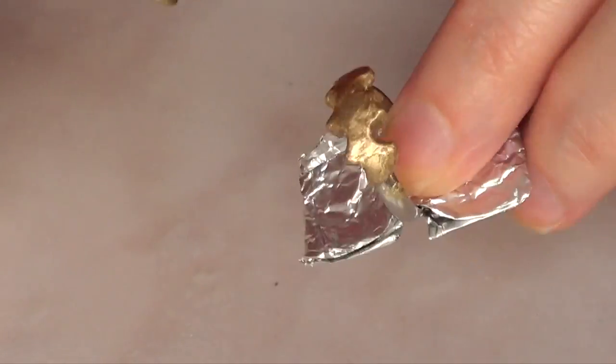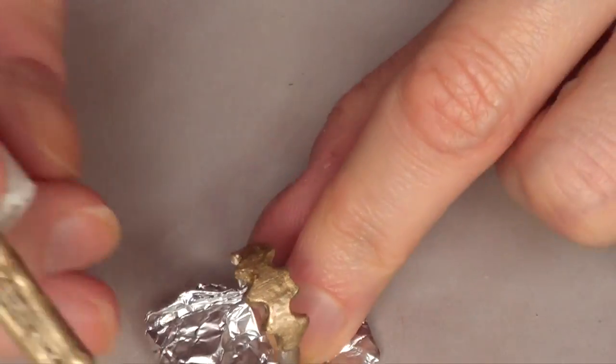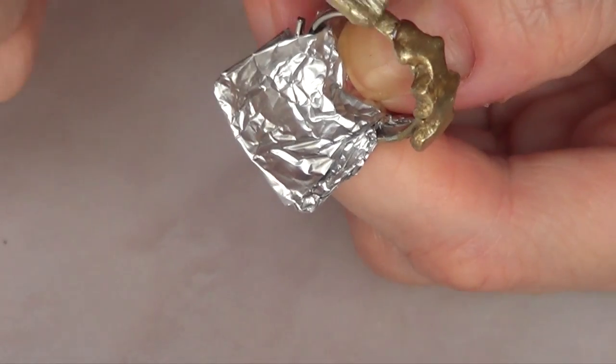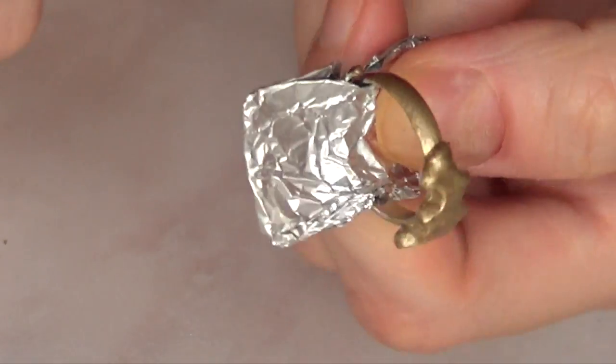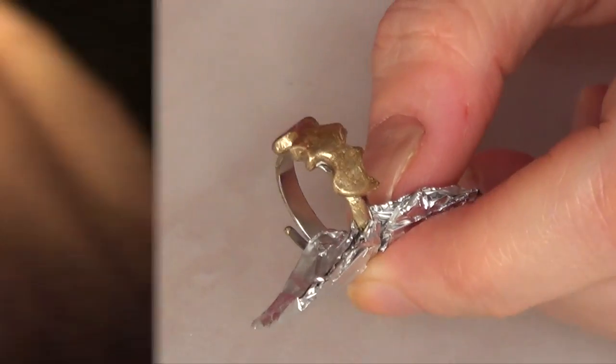Then I topped it with my matte topcoat. I actually did a review on this in my channel if you want to check it out. I painted the whole ring and everything in gold, and that's pretty much it.